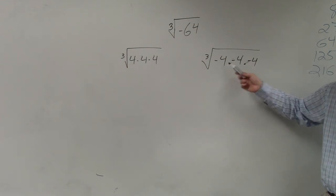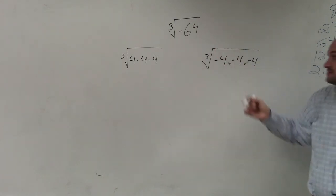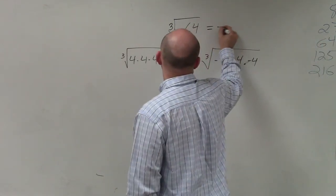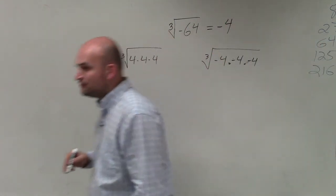Do you guys see how negative 4 multiplied by itself three times is going to give you negative 64? So the answer is just negative 4.